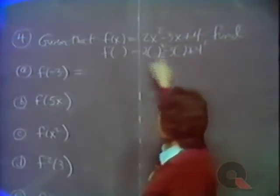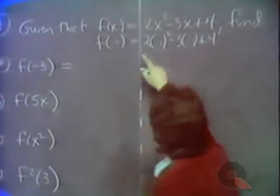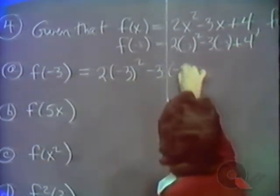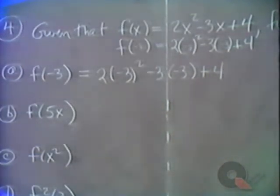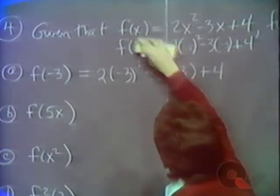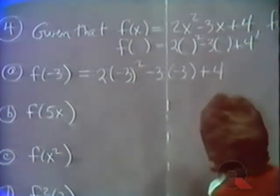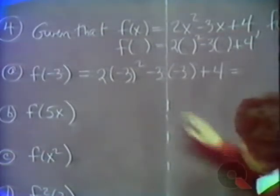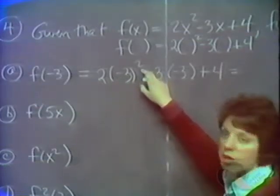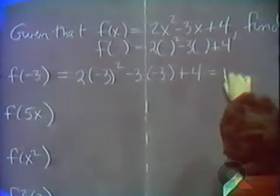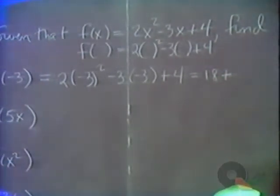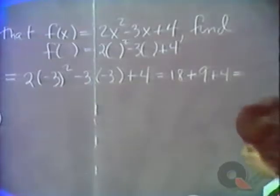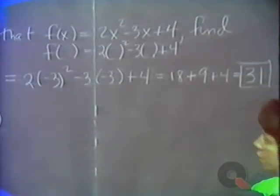If you want f of minus 3, you feed minus 3 into the function: 2 times minus 3 squared minus 3 times minus 3 plus 4. Every place you see an x, you substitute in minus 3. Remembering our order of operations: minus 3 squared is 9 times 2, that's 18. Minus 3 times minus 3 is plus 9, plus 4. So we get 18 plus 9 is 27, plus 4 is 31. That is the answer for f of minus 3.